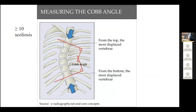Scoliosis is measured using the cob angle. You draw two perpendicular lines through your spine, and where they cross creates the cob angle. The more bent your spine is, the larger the cob angle. A cob angle greater than or equal to 10 degrees is considered scoliosis.